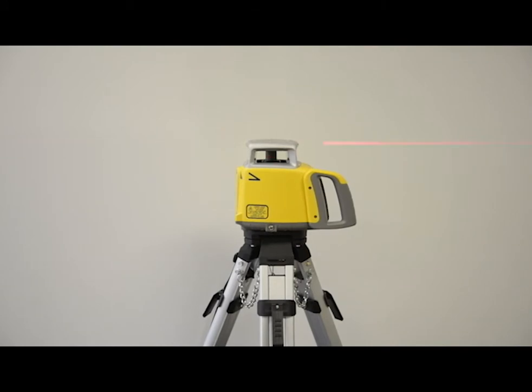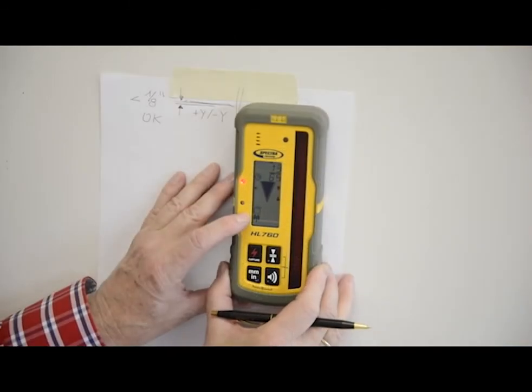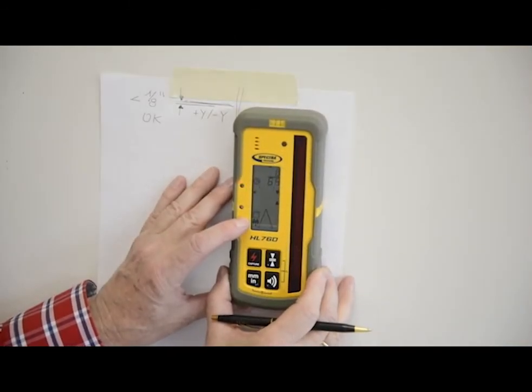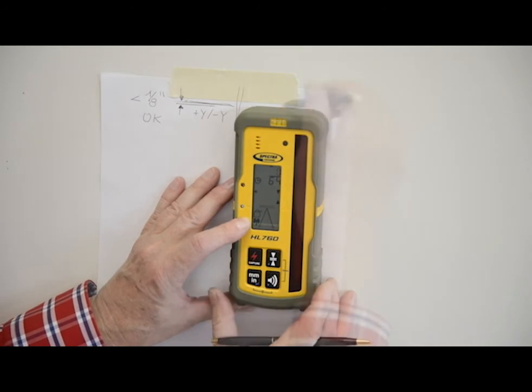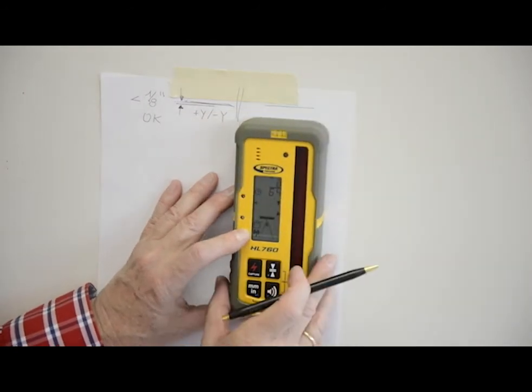After checking the Y axis, rotate the laser 90 degrees and the plus X axis is facing the wall. Raise or lower the receiver until you get an on-grade reading for the plus X axis and make a third mark on the wall.